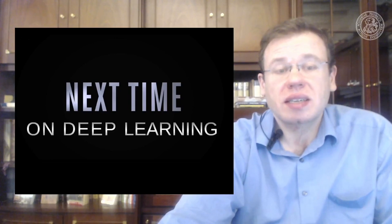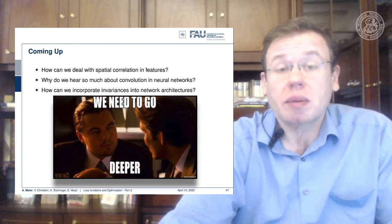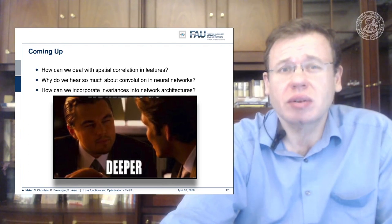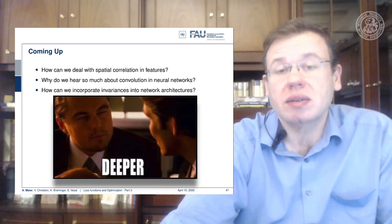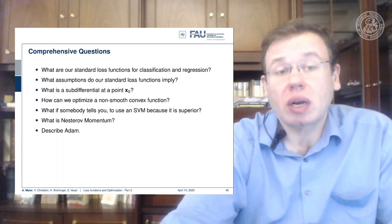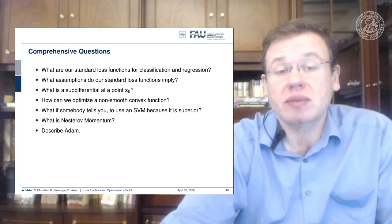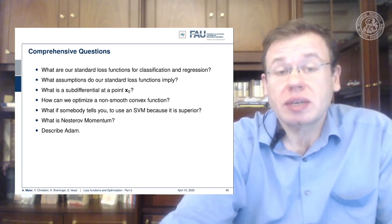This brings us towards a short outlook on the next couple of videos. We will cover the actual deep learning part — we haven't discussed deep learning at all so far. Topics include how to deal with spatial correlation and features, convolution in neural networks, and how to incorporate invariances into network architectures. Some review questions: what are our standard loss functions for classification and regression? L2 for regression and cross-entropy loss for classification — you should be able to derive those, as the statistical assumptions and probabilistic theory behind them are really important.